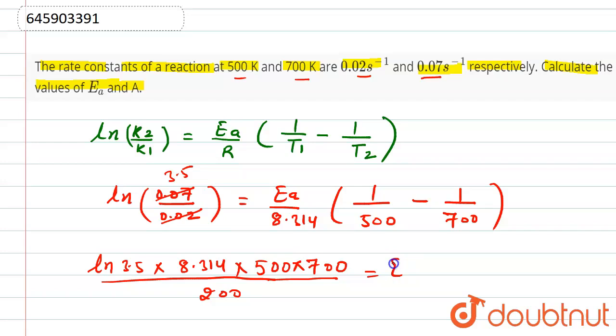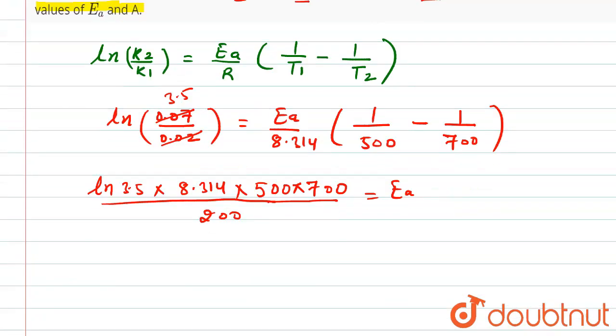This will be the value of activation energy. Now find the value of this. Ln 3.5, these zeros will get cancelled out. Here we can see this 2 and this will get cancelled out. 4.157.